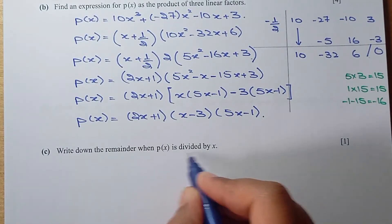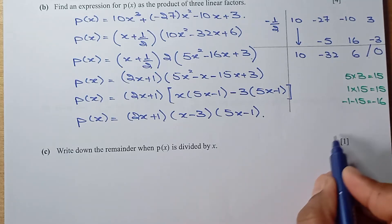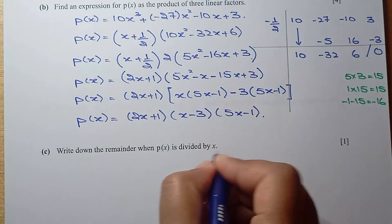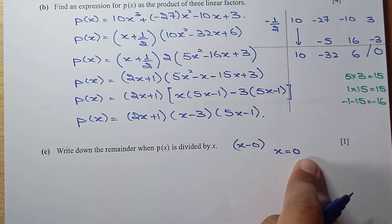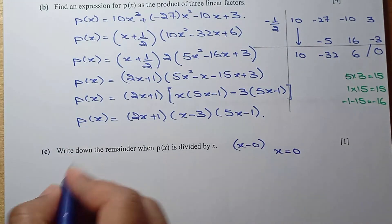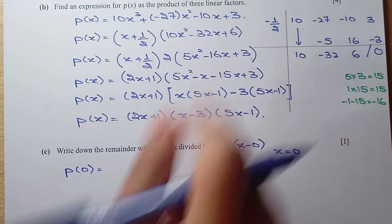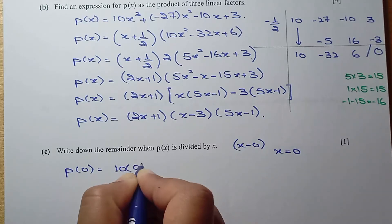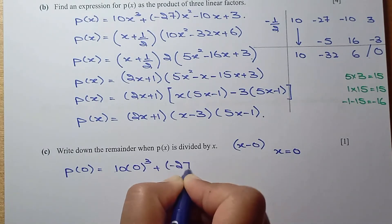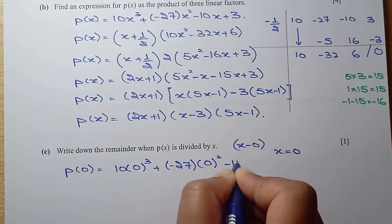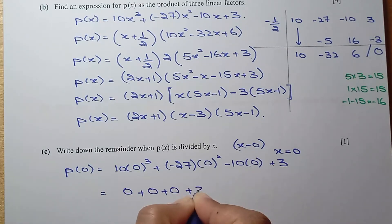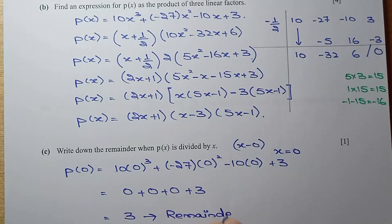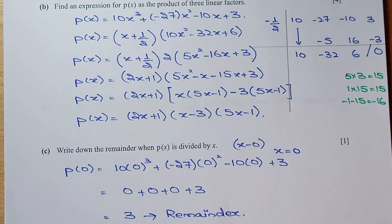Part c: find the remainder when P of x is divided by x. Using the remainder theorem, when divided by x, we set x equals 0. Substituting into the polynomial: P of 0 equals 10(0) cubed minus 27(0) squared minus 10(0) plus 3 equals 3. So the remainder is 3.